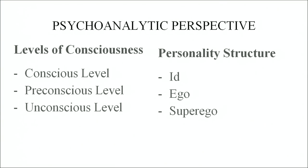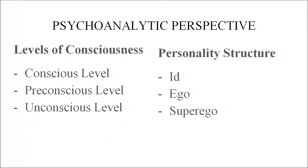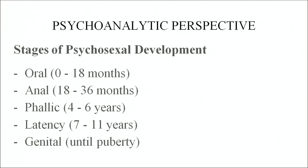The levels of consciousness that Freud gave were consciousness, pre-conscious and unconscious. Along with that, there were some personality structures that he talked about: id, ego and superego. Then he also talked about stages of psychosexual development, which is the oral, anal, phallic, latency and genital stage.